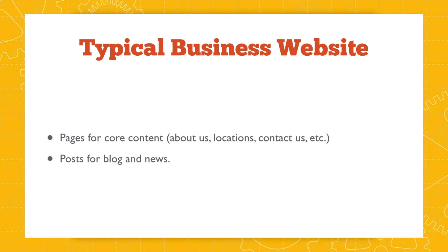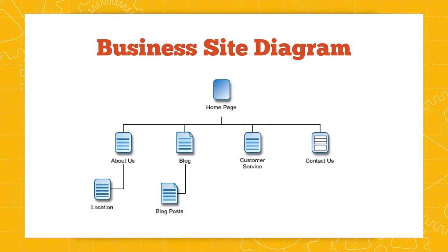This is the structure of a traditional business website. You have pages for your core content, like About Us, maybe your locations, a contact page, and whatever else you're publishing. You'll also be using posts for your blog or news area. This is a site diagram — you can see the homepage at the top, About Us is a page, and the location under that is a subpage. The blog contains several posts, and Customer Service and Contact Us are pages.